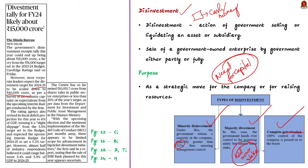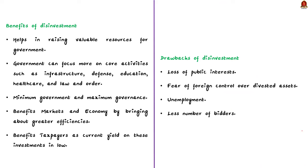The benefits of disinvestment include: first, raising valuable resources for the government; second, the government can focus more on core activities like infrastructure, defence, education, healthcare, and law and order; third, it results in a leaner government with reduction in the number of ministries and bureaucrats — aligned with the current government's slogan of minimum government and maximum governance. It also brings greater efficiencies for the economy and markets, and benefits taxpayers as the current yield on these investments is abysmally low.